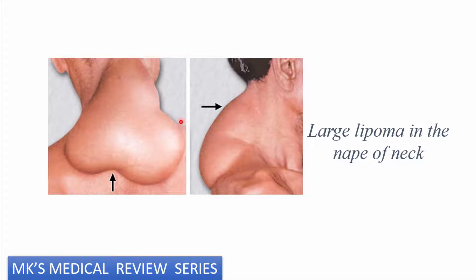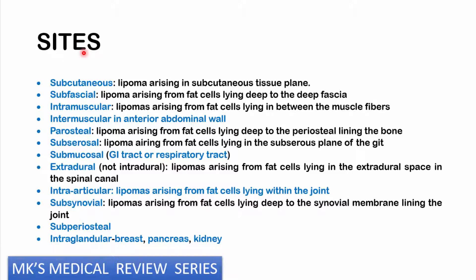Here's another image of a very large lipoma present on the nape of the neck of an individual — as you can see, it has grown to a very huge size. Depending on the sites where you find the lipoma: it could be in the subcutaneous tissue, in the subfascial space, in the intramuscular space, in the anterior wall of the abdomen, arising in the periosteal lining of the bone, in the serosa, in the submucosal area, sometimes even in the extradural area. They may sometimes even be found in joints — referred to as intraarticular lipomas — in the synovial membranes, the subperiosteal, and sometimes even within glands, especially the breast, the pancreas, and the kidneys.